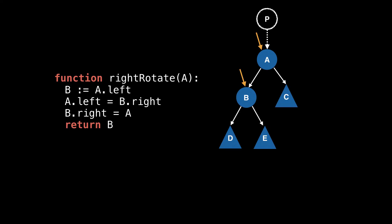Then we'll want a pointer to node B. After that, set A's left pointer to point to B's right child. Then change B's right pointer to point to node A, and we've successfully done a right rotation.